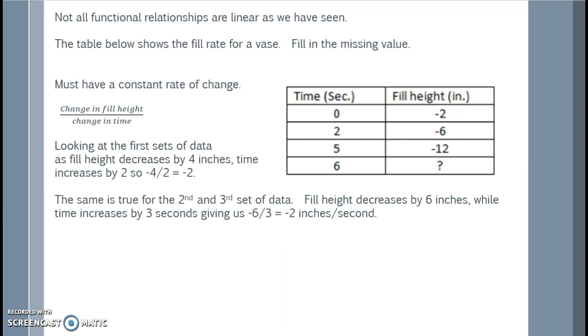The same is true for the second and third set of data. The fill height is decreasing by 6 inches, while time is increasing by 3 seconds, giving us negative 6 divided by 3, which is negative 2 inches per second.